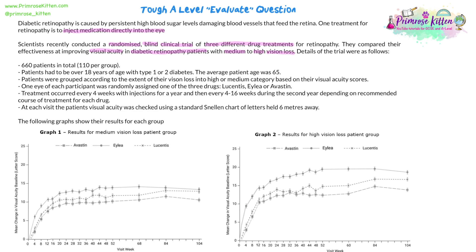Details of the trial: 666 patients in total, 110 per group. Patients had to be over 18 years of age with type 1 or type 2 diabetes, and the average patient age was 65. Patients were grouped according to the extent of their vision loss into high or medium categories based on their visual acuity scores. One eye of each patient was randomly assigned one of three drugs: Lucentis, Ilea, or Avastin. Treatment occurred every four weeks for a year, then every four to sixteen weeks during the second year. At each visit, visual acuity was checked using a standard Snellen chart held six metres away.